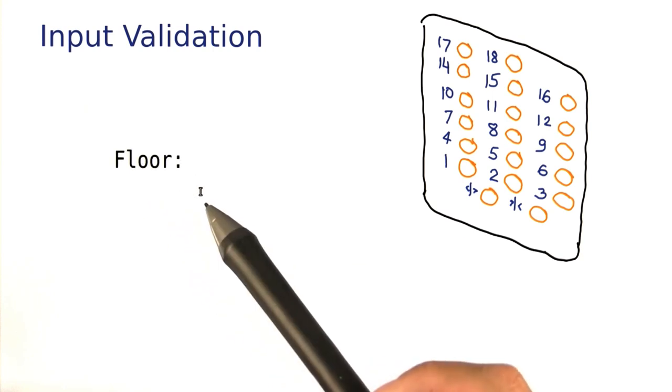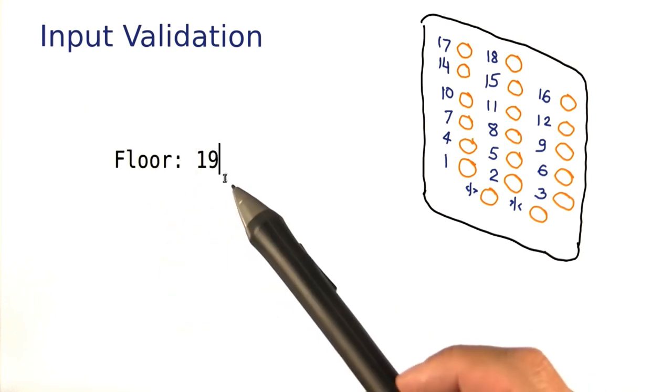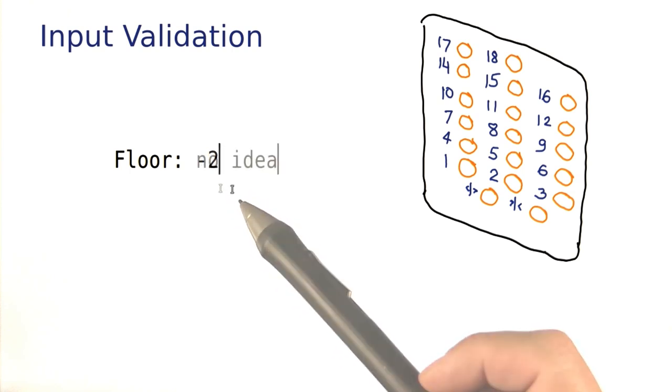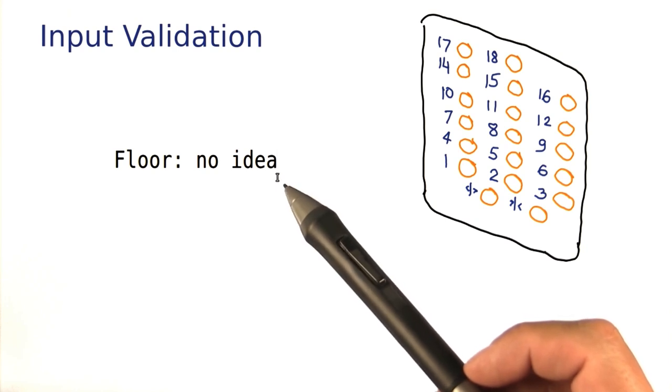There's a prompt, and then what if some crazy user now enters 19 in the hope of getting to the roof or something, or minus 2, or some text. Users do all sorts of interesting things,